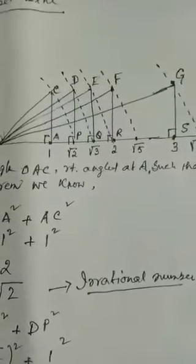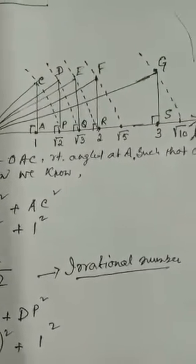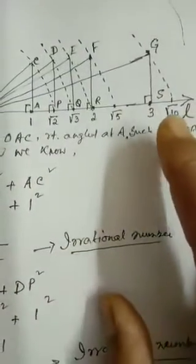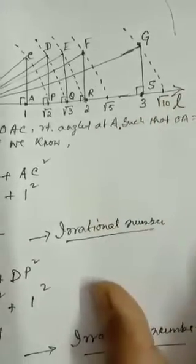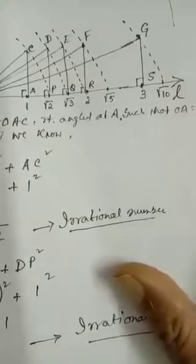Now, to locate the point on the number line, you take OG as the radius and draw this arc. Where this arc touches the number line, that will be the point root 10, which shows the value root 10. So this way you can represent root 10 on the number line.